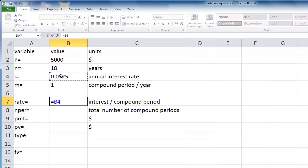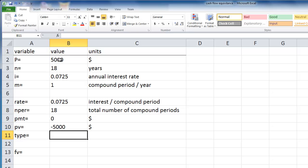To calculate rate, divide the annual interest rate by the number of compound periods per year. To define the total number of compound periods, multiply the number of years by the number of compound periods per year. PV must be negative, so remember to add a minus sign.